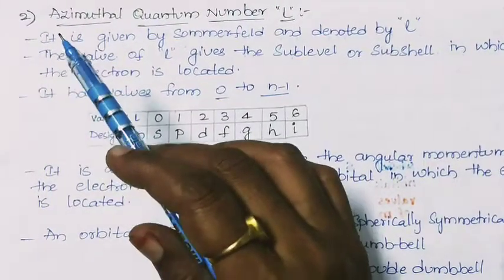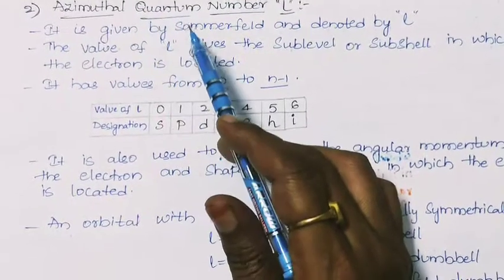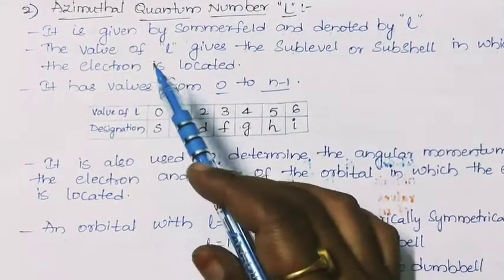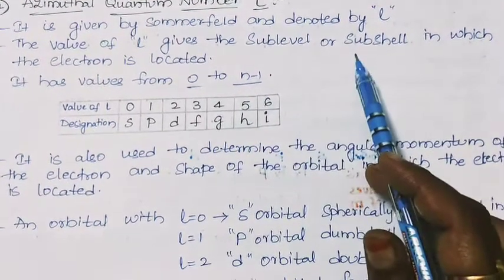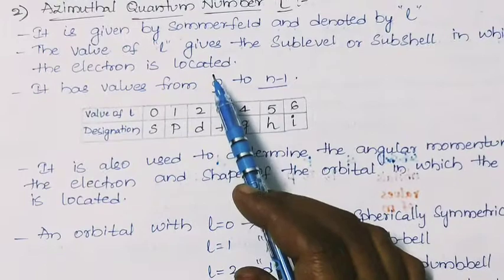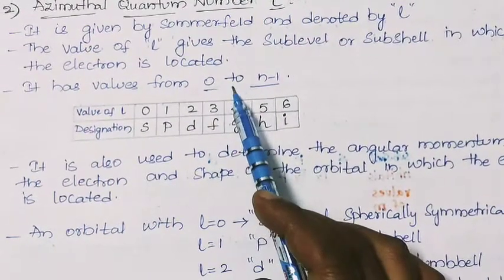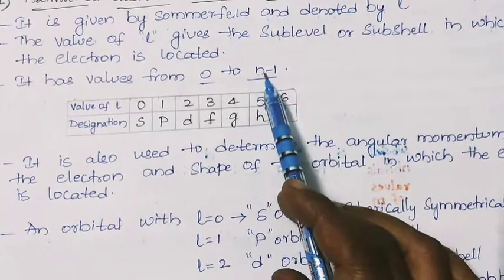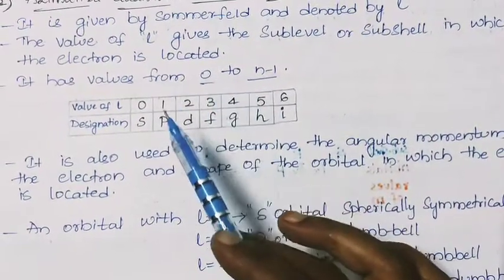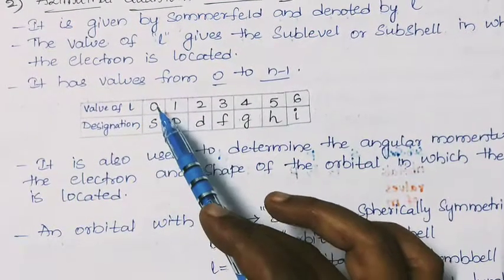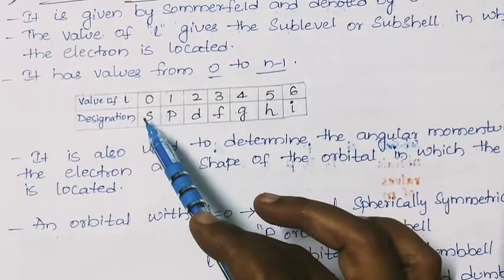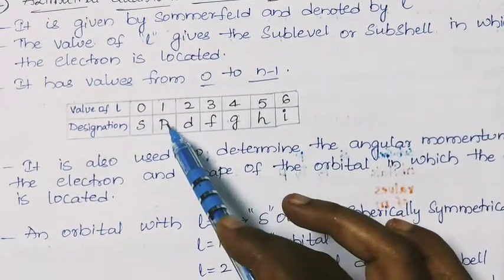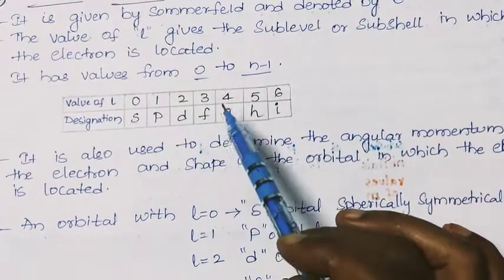The second quantum number is the azimuthal quantum number or angular momentum quantum number. It is given by Sommerfeld and denoted by small l. The value of l gives the sub-level or sub-shell in which the electron is located. It has values from 0 to n − 1. When l = 0, the sub-shell is s; when l = 1, it is p; when l = 2, it is d; and when l = 3, it is f.